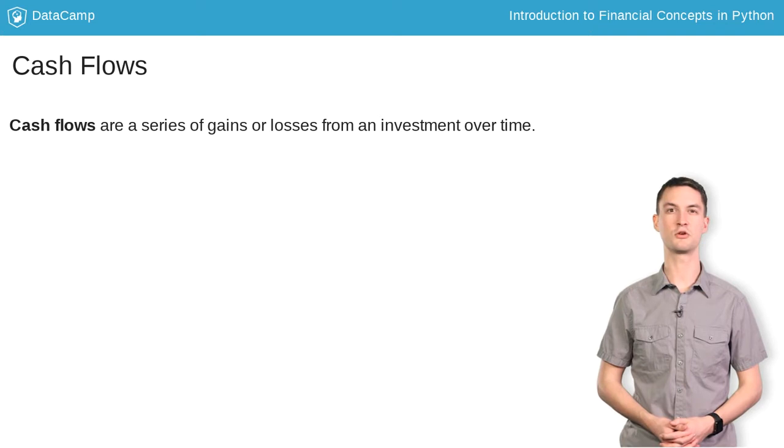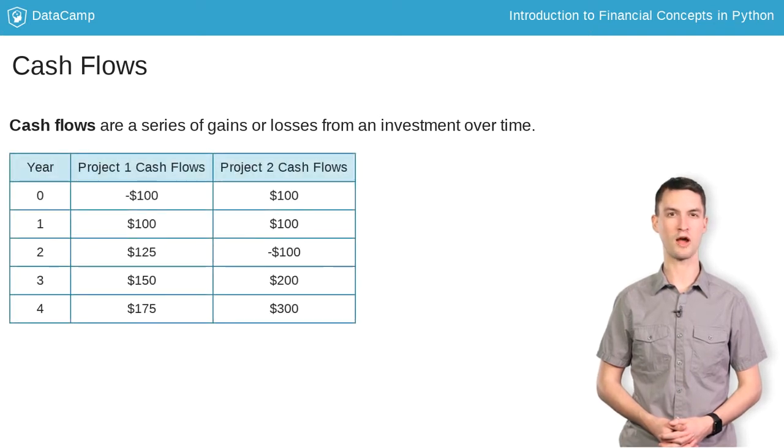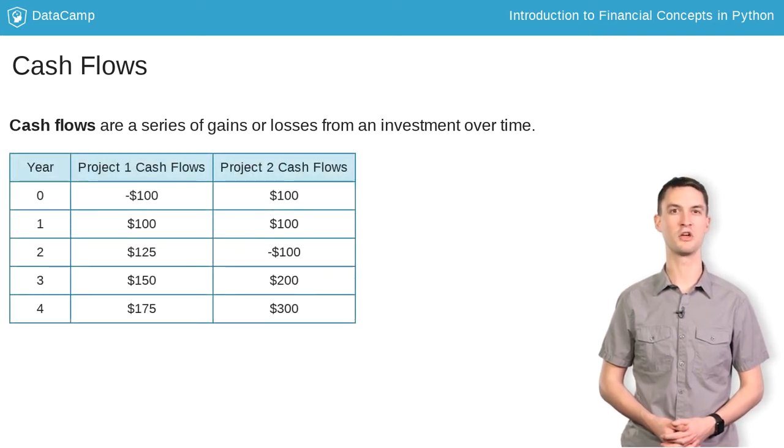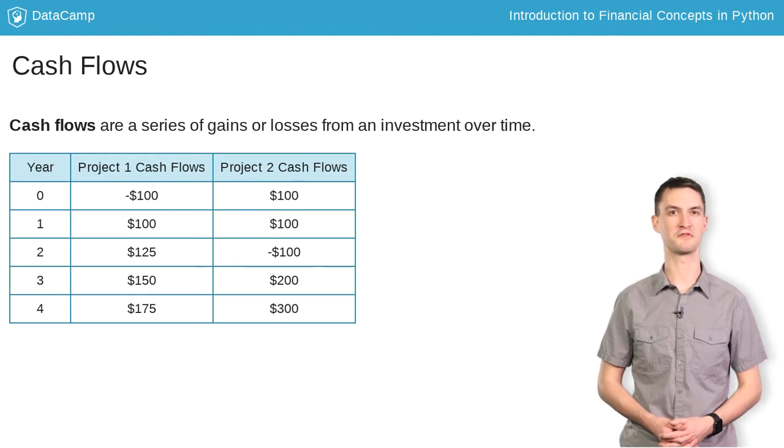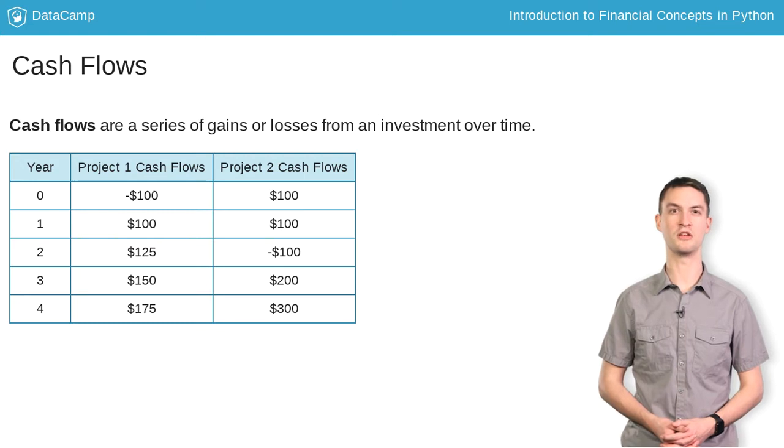For example, consider Project 1, which requires an upfront initial investment of $100, generating a series of cash flows for the next four years. Project 2, on the other hand, has a more unusual structure.